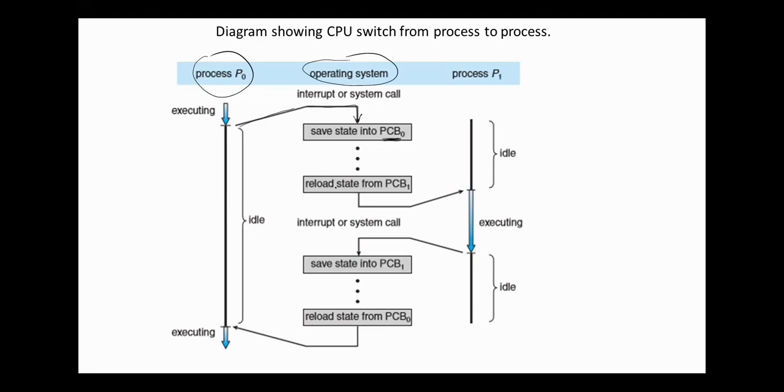Then, the operating system reloads the state for the new process from its process control block. Now, the CPU will execute process 1. If interrupt or system call occur, again, the operating system saves the state for process 1 into process control block 1 and reloads the values for process 0 from its control block and continue executing process 0.